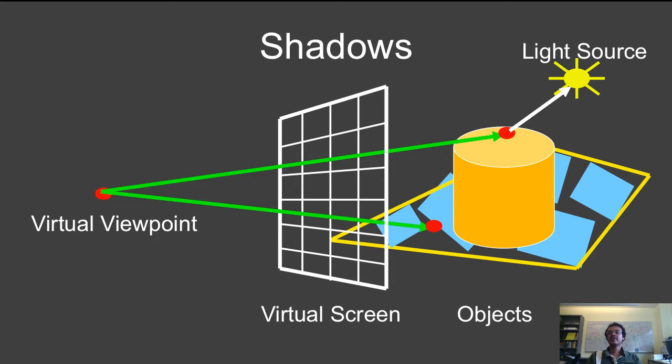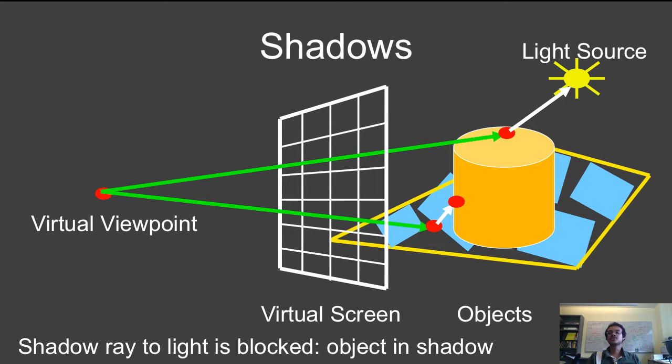Here is another pixel where my ray from my camera hits the ground. Again I shoot a ray towards the light source, but this time it hits the cylinder. Therefore, the ray to the light source is blocked, and the object is in shadow. As simple as that.